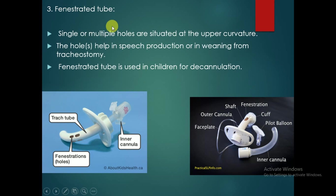You can see the fenestration tube — this is the fenestration tube, you can see the fenestration here. Single or multiple holes are situated in the upper curvature. These holes help in speech production or in weaning from the tracheostomy.